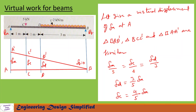Now to find reaction at A (RA), let us give a virtual displacement of delta A at A, so the beam will assume the position B, D prime, C prime, and A prime. Here also we have three similar triangles: B-D-D prime, B-C-C prime, and B-A-A prime. The distance from A to B is 5 meters, from C to B is 4 meters, and from D to B is 3 meters. Displacement at A is delta A and at B it is 0. From the similar triangles: delta A / 5 = delta C / 4 = delta D / 3, giving delta D = (3/5) × delta A and delta C = (4/5) × delta A.